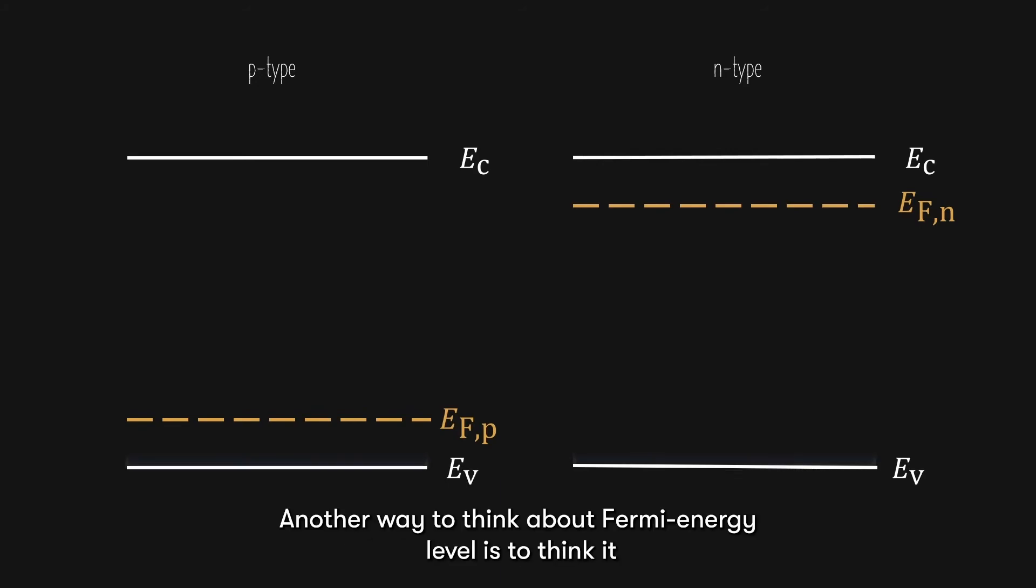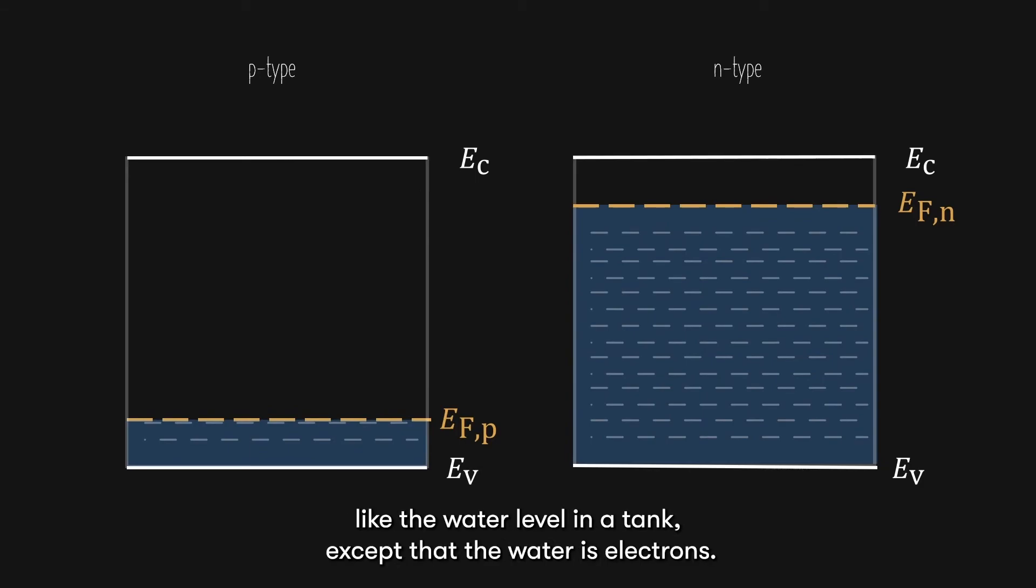Another way to think about Fermi energy level is to think it like the water level in a tank, except that the water is electrons. N-type material has more free electrons, and hence its water level is closer to the conduction band than p-type material, which has less electrons or more holes.